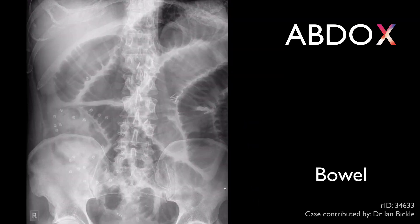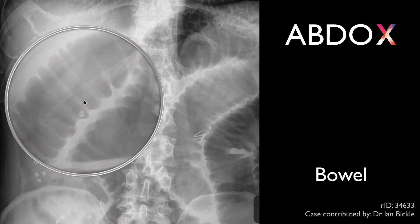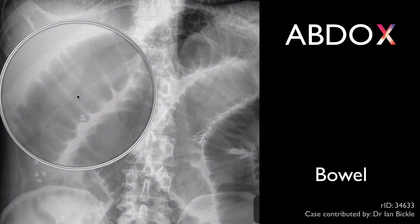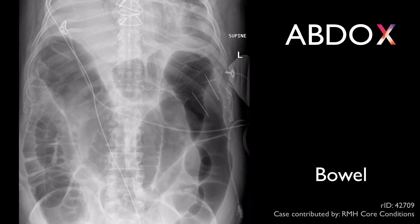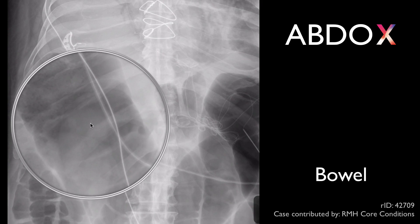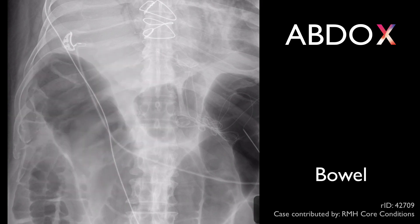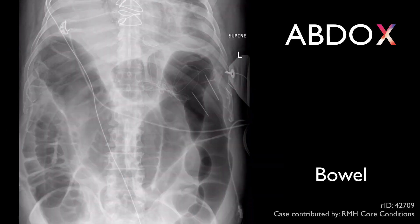B is for bowel. Small bowel can be identified by its central position and lines running all the way across the diameter of the lumen, known as the valvulae conniventes. In contrast, large bowel usually lies peripherally, has lines running part of the way across the diameter, known as the haustrae, and usually contains mottled fecal matter inside the lumen.